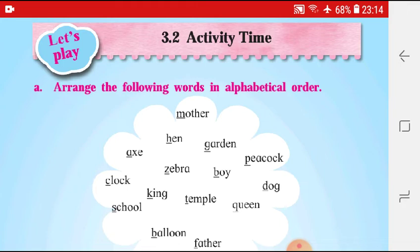Now, alphabetical order means what? The 26 alphabets which we have in the English language, that is A, B, C, D...